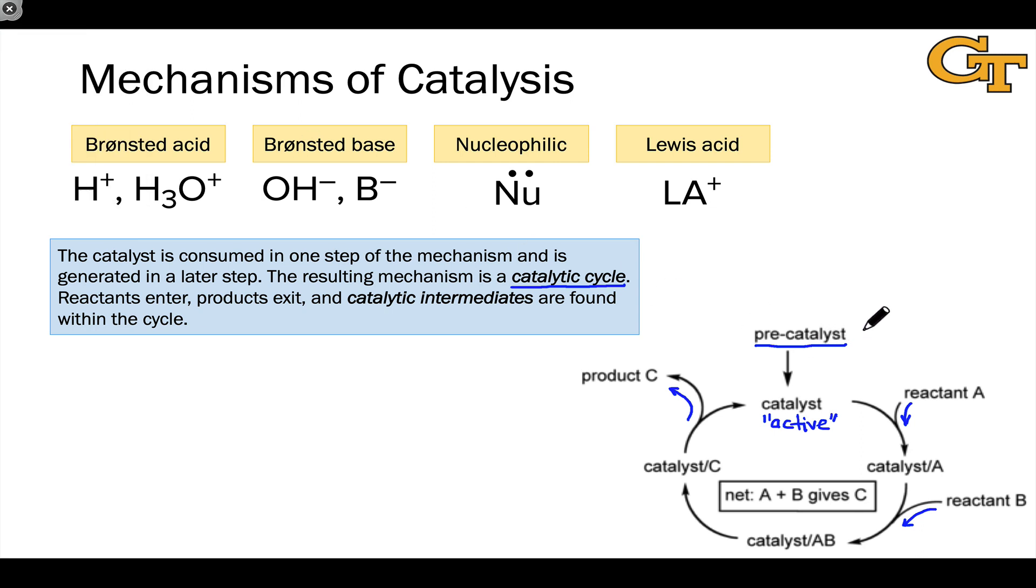A very simple example of this can be found in Bronsted acid catalysis, where, for example, we might see written catalytic HCl over the arrow. But if we're working in aqueous solution or a relatively dilute solution of HCl in water, the active catalyst is really the conjugate acid of water, hydronium ion, H3O+.